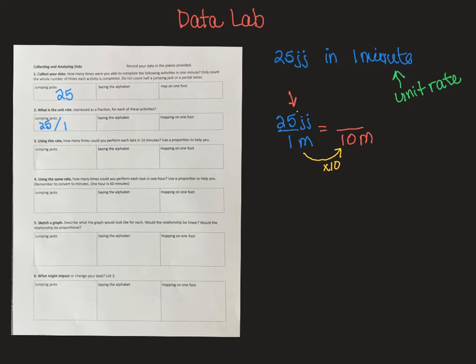And I have 25 jumping jacks. If these are equivalent, remember, they have to be equivalent. They're equivalent ratios. That is what a proportion is. So, they have to be equivalent.